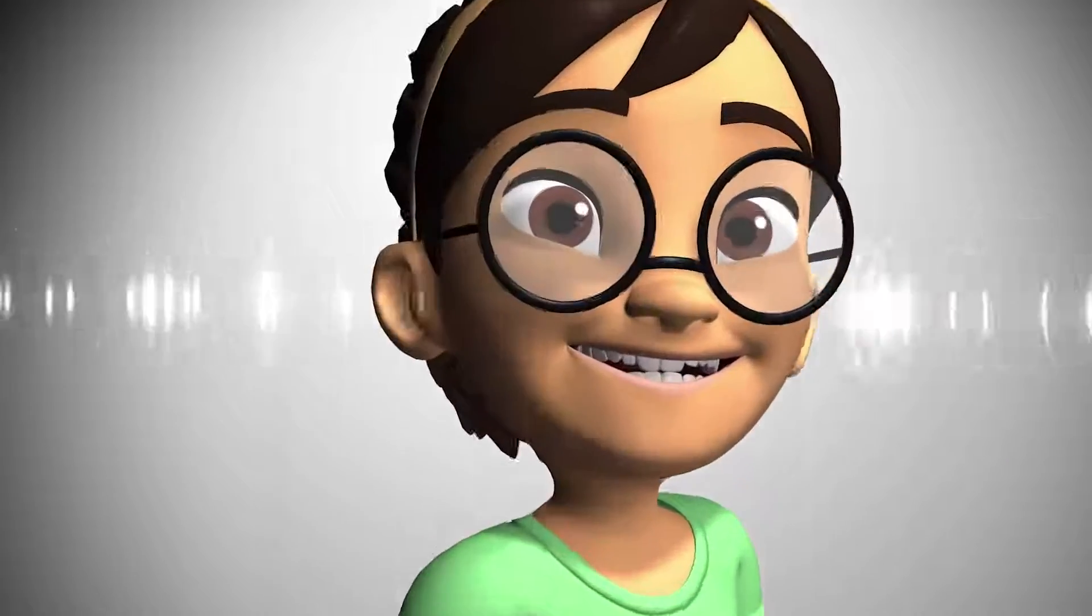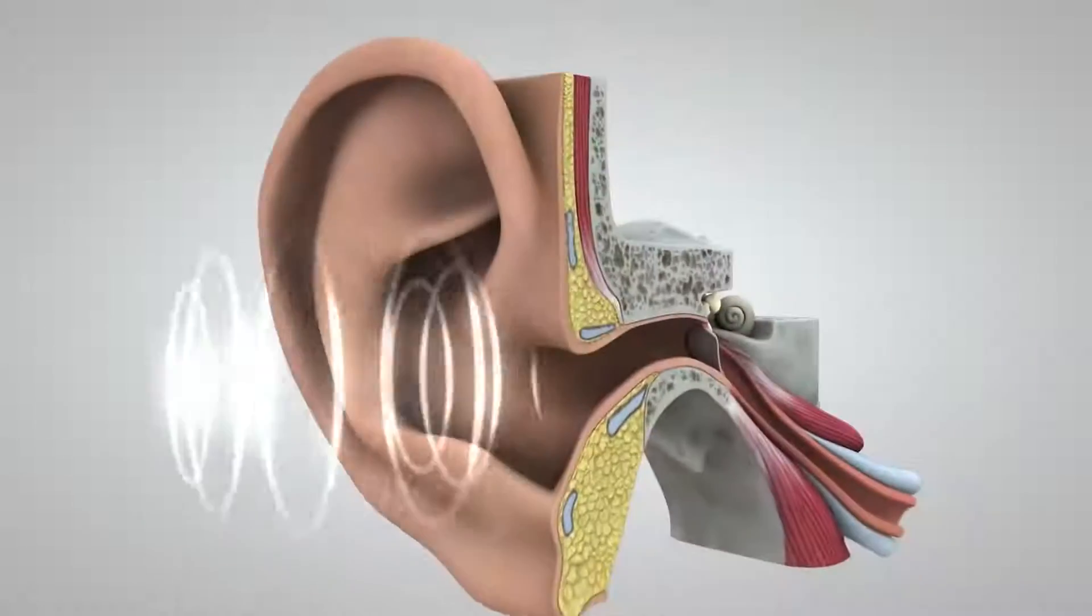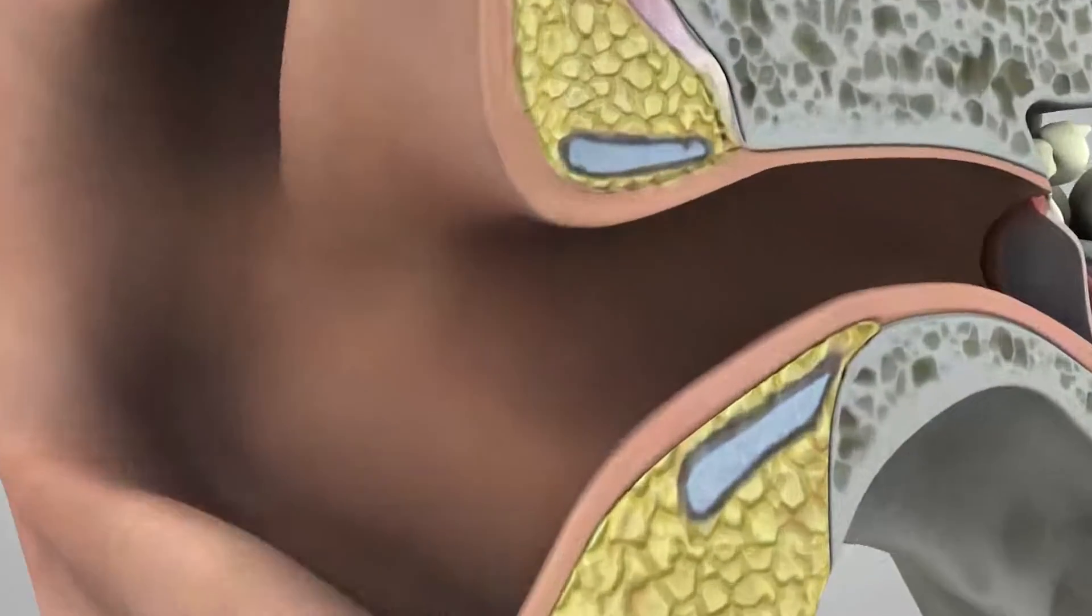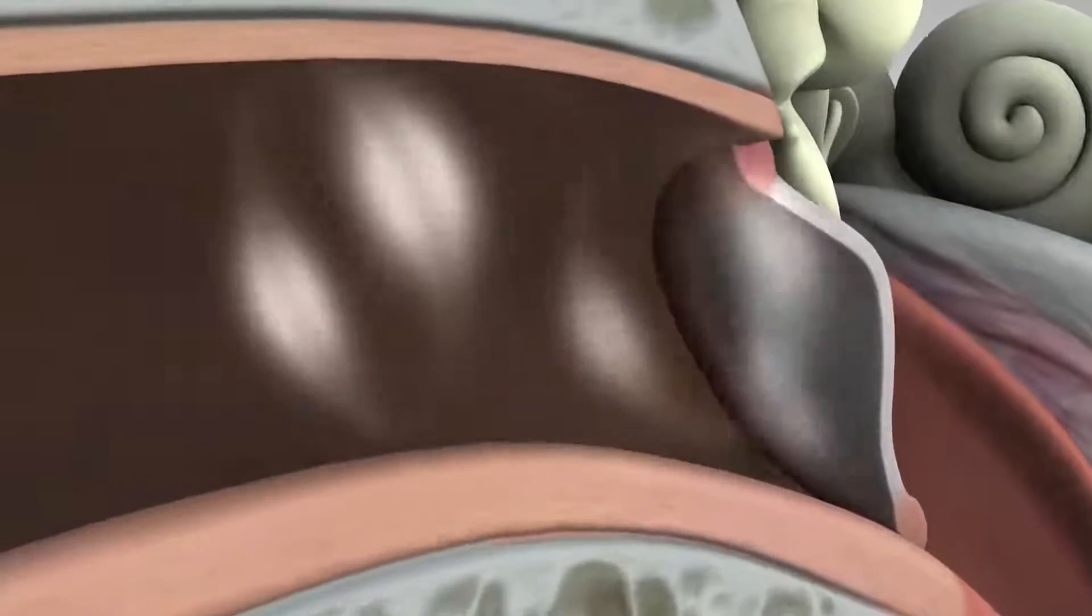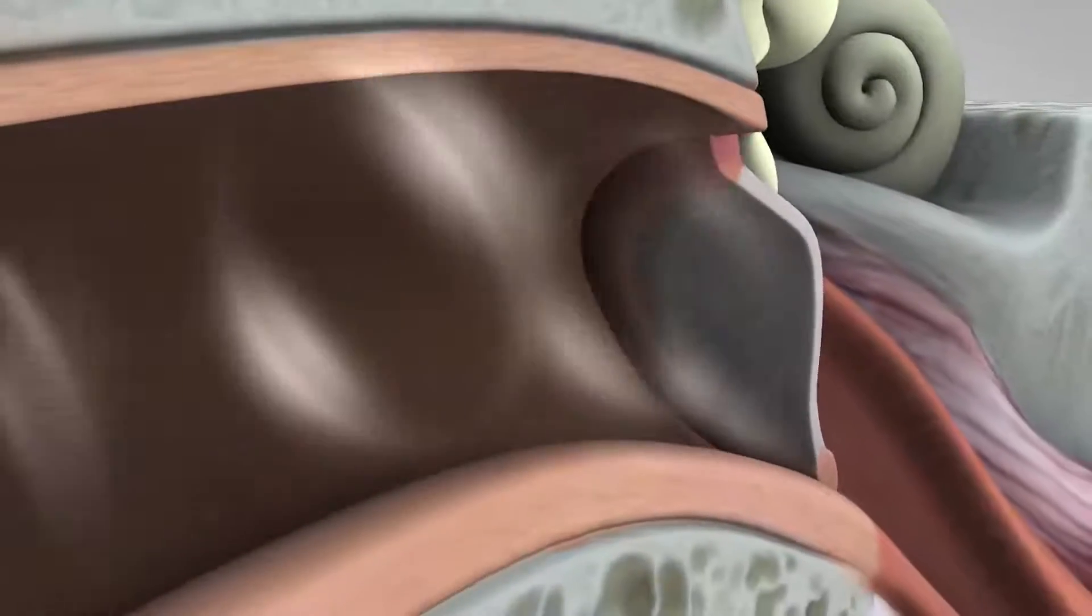The outer ear catches the waves, which then travel through a narrow passageway called the ear canal. The sound waves reach the eardrum, which is a membrane roughly half the size of a dime.